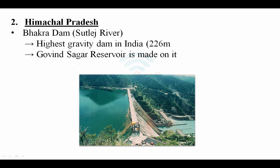Moving to Himachal Pradesh — the most important dam is Bhakra Nangal Dam. Bhakra and Nangal are actually two different dams, both situated on the Sutlej river. Nangal is downstream and Bhakra is above it. Bhakra Dam is the highest gravity dam in India at 226 meters. The Gobind Sagar reservoir is constructed on the Sutlej river near Bhakra Dam — you need to remember this reservoir name.